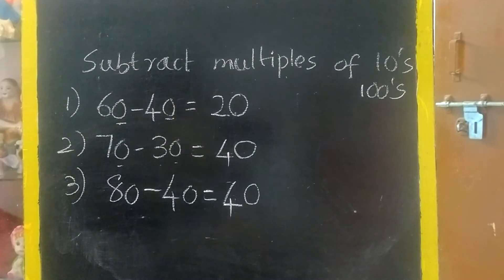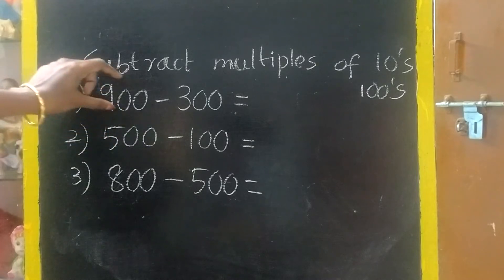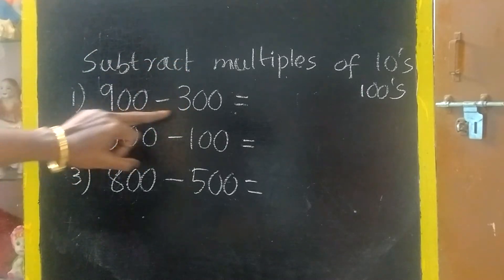Next, let us do multiples of hundreds. First, you have to check whether everything is hundreds. Even minuend and subtrahend, you can see this is 100, this is 100.